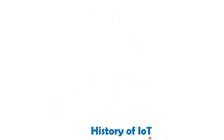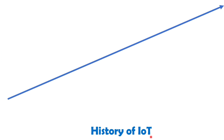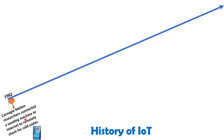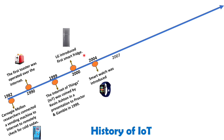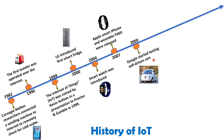Now let's look at the history and evolution of IoT. The journey began in 1928 when Carnegie Mellon connected internet capability to a vending soda machine to monitor its content. Fast forward to 1990, where the first toaster was operated over the internet. In 1999, Kevin Ashton first introduced the term IoT in a presentation to Procter and Gamble, popularizing the concept. The progression continued as LG introduced a smart fridge in 2000 and the smartwatch was invented in 2004. In 2007, Apple introduced the smart iPhone and the wearable Fitbit. Google began testing a self-driving car in 2009, and in 2011, smart TVs made their entry.